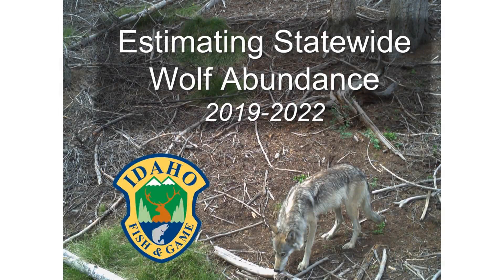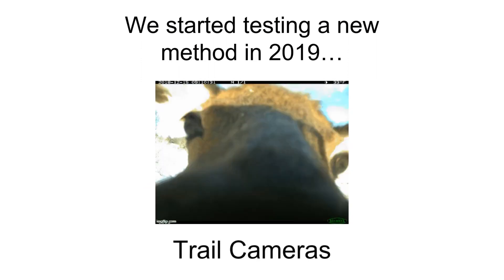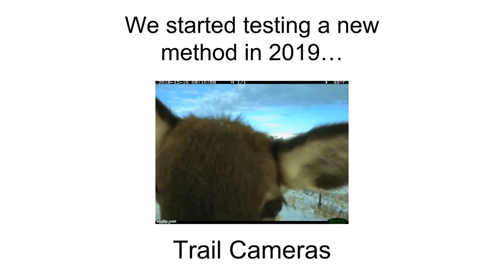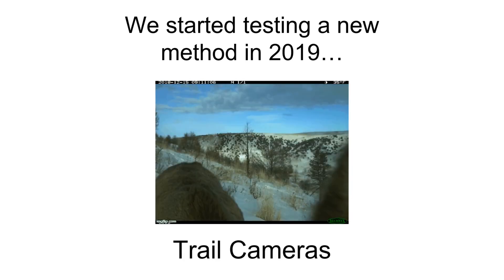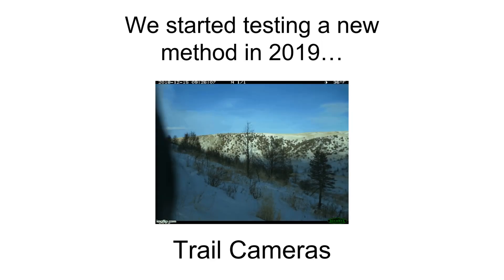Many of the more traditional methods IDFG uses to estimate big game numbers rely on aerial surveys or the capture and marking of animals. Starting in 2019 we began field testing new methods that use arrays of trail cameras to estimate several aspects of large animal populations, including how many there are, which we'll call abundance from here on out.